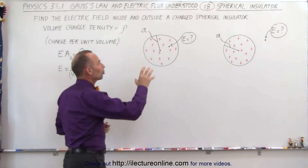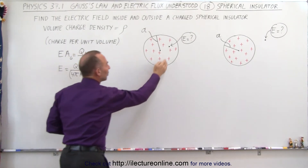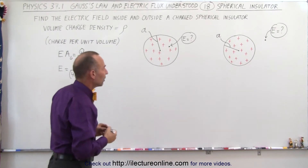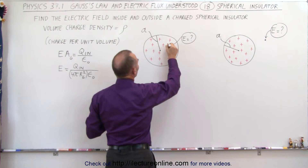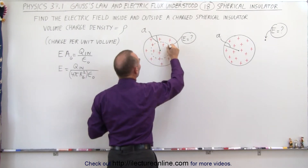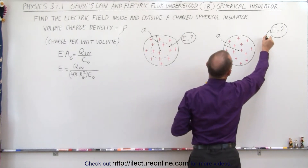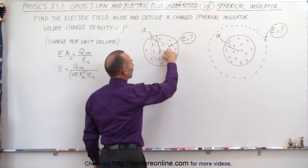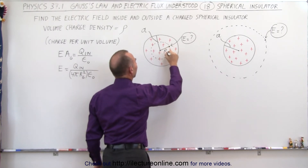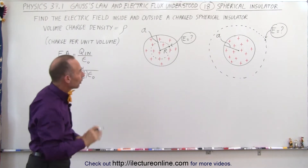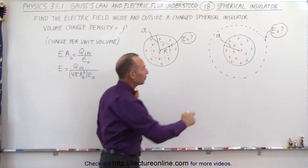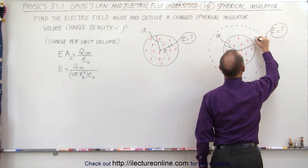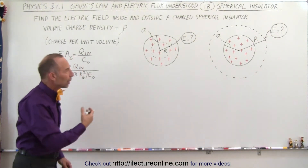What we need to do is find out how much charge will be inside the Gaussian surface when we find the electric field inside the sphere, and how much will be inside the Gaussian surface when we find it outside the sphere. Let's draw the Gaussian surface in each case. We'll have a spherical shape that holds only a portion of the sphere in one case, and the entire sphere in the other. The distance from the center of the sphere to the Gaussian surface we call r, and a represents the radius of the charged sphere itself — a is the constant, r is the variable.